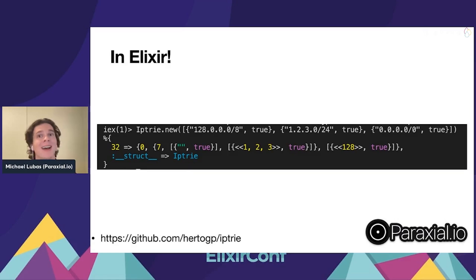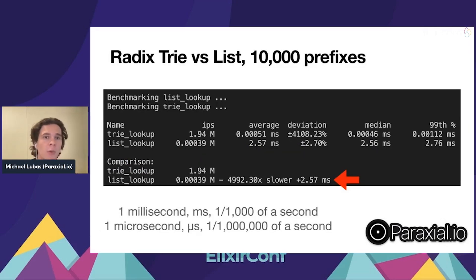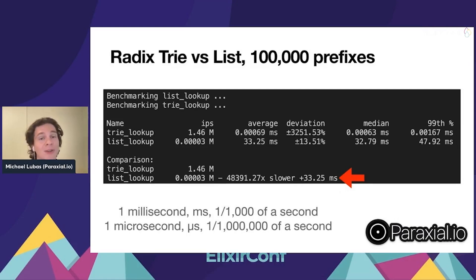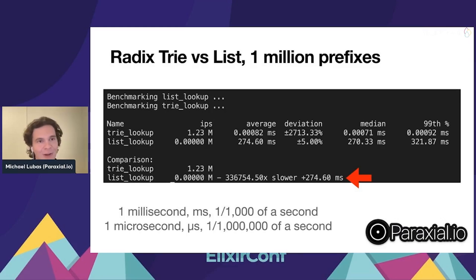How much faster is this? With 10,000 fake prefixes, the list is about 5,000 times slower per operation — trie lookups measure in microseconds while list lookups measure in milliseconds. At 100,000 prefixes, it's about 48,000 times slower, up to 33ms. At a million prefixes, the list shows noticeable lag while the trie lookup has barely increased at all, still in microseconds. That's why you want to think the problem through this way.